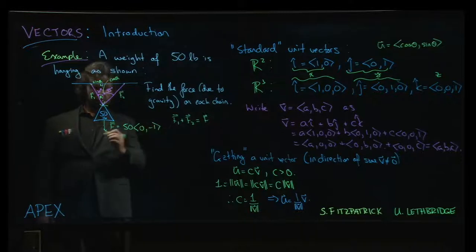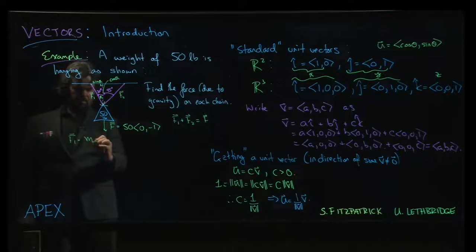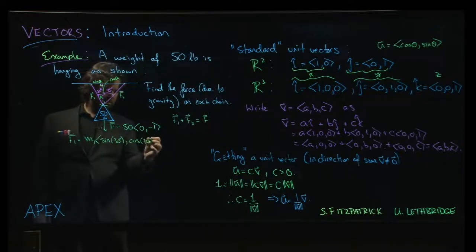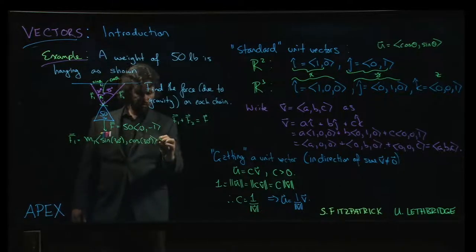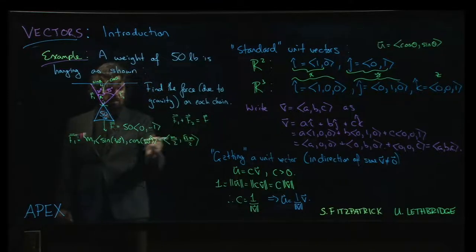And so what we can do is we can say, well, F1, it's going to be some multiple, let's say, M1, of sine, in this case, 30 degrees, and cosine 30 degrees, right? Well, we don't know yet what that M1 is, okay? And now, of course, we know sine 30 degrees is 1 half, so this is M1 over 2. Cosine of 30 degrees is root 3 over 2, okay? So we get that vector there.